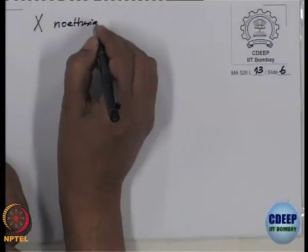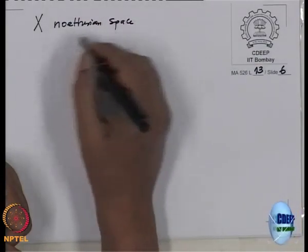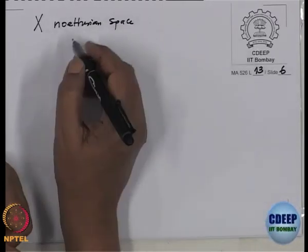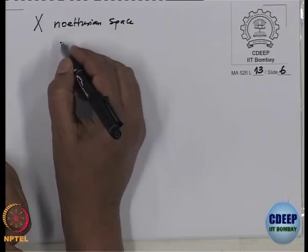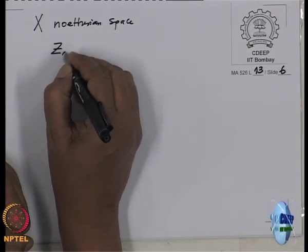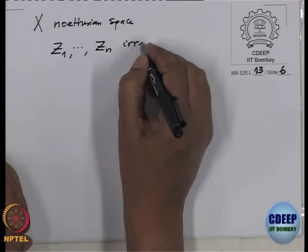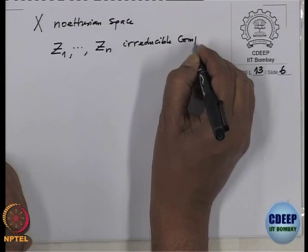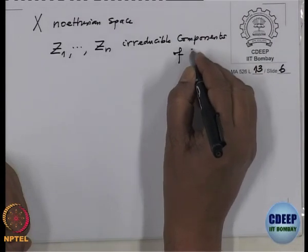It also justifies calling Spec A[X_1,...,X_n] an affine n-space over A, since it has dimension n. Now the next object we usually study — analogous to what one does in linear algebra — is hypersurfaces. Hypersurfaces are given by one equation, and I want to prove the analog of that in this setup today. But before I do, I just want to recall that when X is a Noetherian topological space — you know the definition — a Noetherian space is a union of finitely many irreducible components.